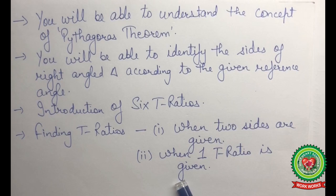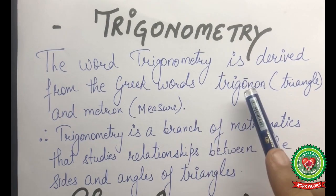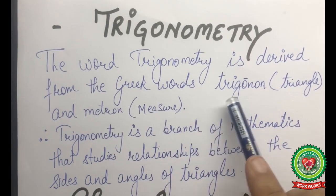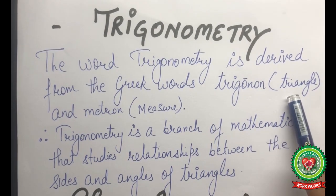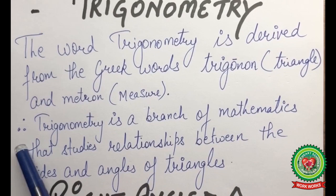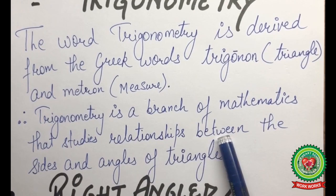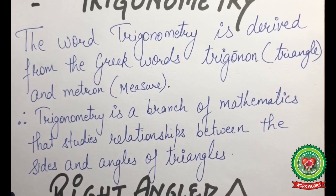Let us start with the discussion of trigonometry. The word trigonometry is derived from the Greek words: trigonon, meaning triangle — the three-sided closed figure — and metron, meaning measure. Therefore, trigonometry is a branch of mathematics that studies the relationship between the sides and the angles of triangles. You have already discussed the various classifications of triangles in your previous classes.